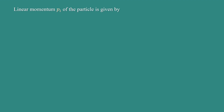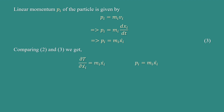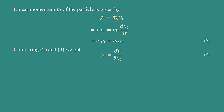The linear momentum Pᵢ of the particle is given by Pᵢ = Mᵢ × Vᵢ. Again, Vᵢ = dxᵢ/dt, which implies Pᵢ = Mᵢẋᵢ. This is equation number 3. Comparing equations 2 and 3, we get Pᵢ = ∂T/∂ẋᵢ, since from equation 2, ∂T/∂ẋᵢ = Mᵢẋᵢ, and from equation 3, Pᵢ = Mᵢẋᵢ. This is equation number 4.